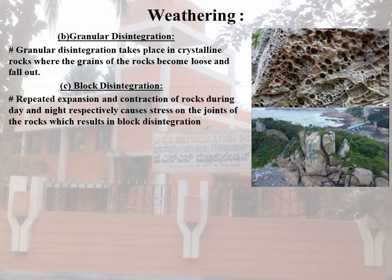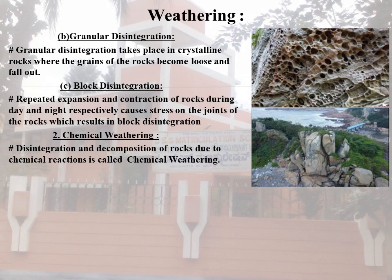Now the second type of Weathering is Chemical Weathering. Disintegration and decomposition of rocks due to chemical reaction is called Chemical Weathering. This is predominantly high in hot and humid regions such as the equatorial, tropical and subtropical zones.